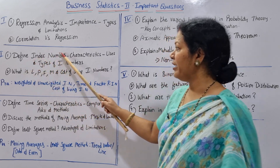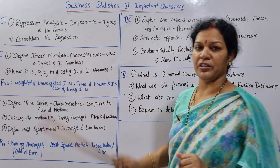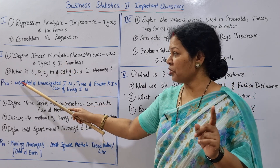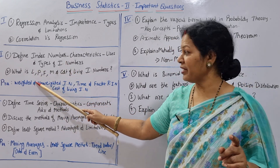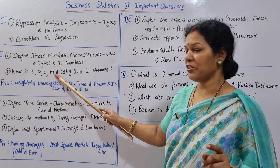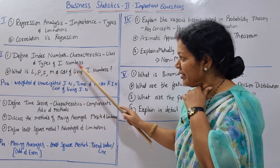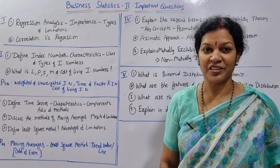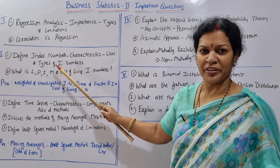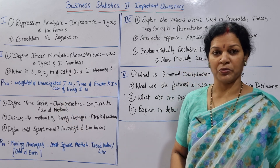Second unit: Define Index Numbers — their characteristics, uses, and types. This is one question to prepare. Index numbers in short: what is Laspeyre's index number, Paasche's index number, Fisher's index number, and Marshall's index number. Cost of Living Index Numbers is also important. In short, the types of index numbers are already covered, so prepare this one question.